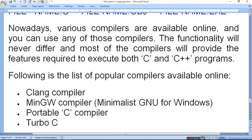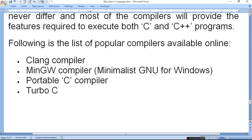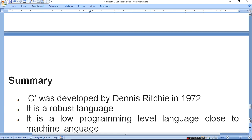Nowadays various compilers are available online and you can use any of them. The functionality will never differ and most compilers will provide features required to execute both C and C++ programs. Popular compilers include: Clang compiler, MinGW compiler, Portable C compiler, and Turbo C. We will use Turbo C and also Visual Studio for the Windows version.